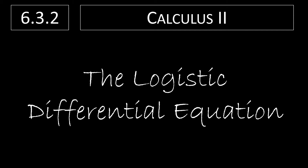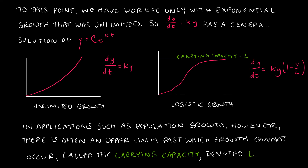In this video, we're going to take a look at the logistic differential equation. To this point, we've worked only with unlimited exponential growth, meaning there was no upper bound — we could continue growing forever. Our differential equation looked like dy/dt equals ky, and we've worked extensively with finding the general solution and particular solutions to that form. The general solution always had the form y equals C·e^(kt).